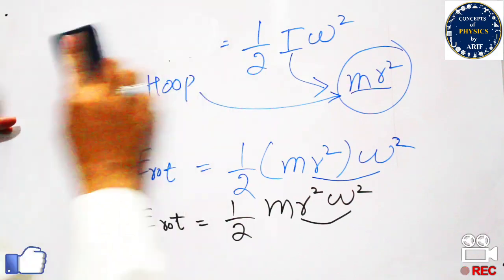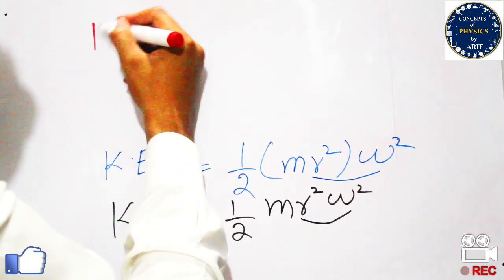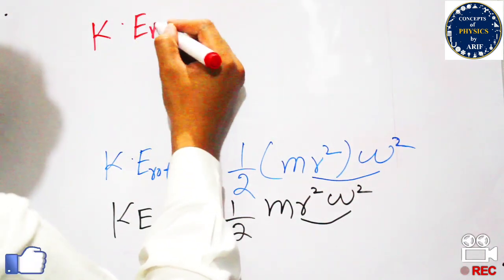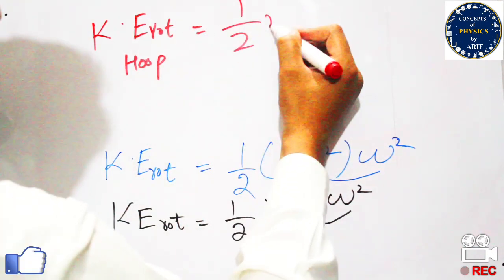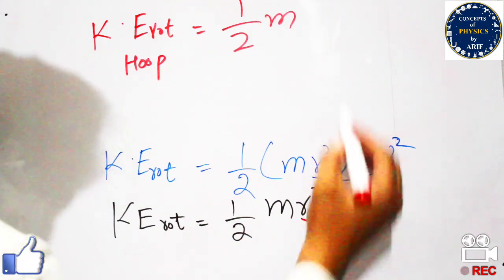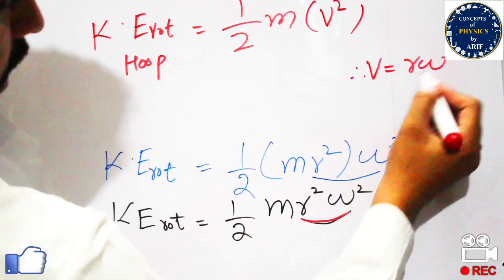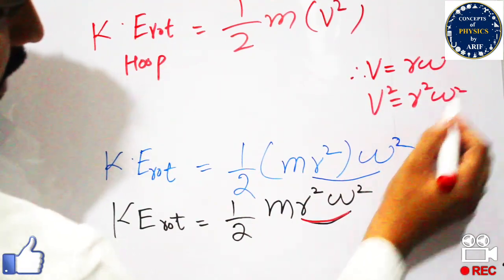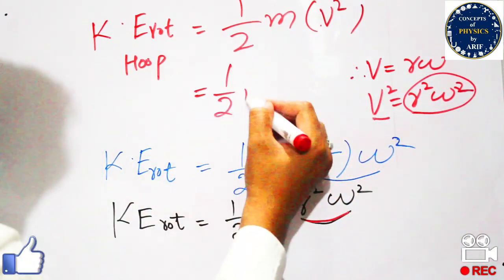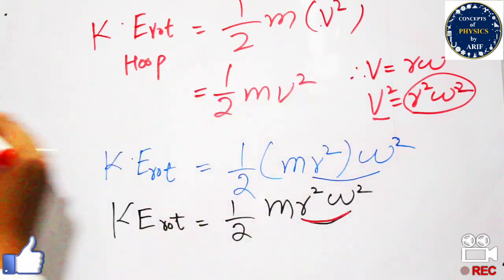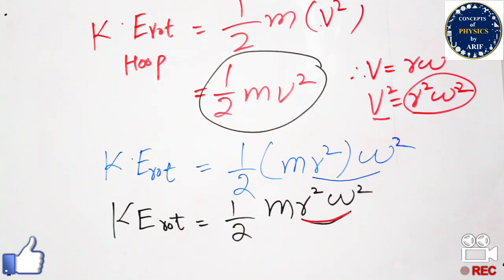We previously discussed that r squared omega squared can be replaced by the translational velocity squared. So the rotational kinetic energy of a hoop becomes one-half m v squared, since r squared omega squared is replaced by v squared from the relation v equals r omega. This one-half m v squared is the final expression for the rotational kinetic energy of a hoop.